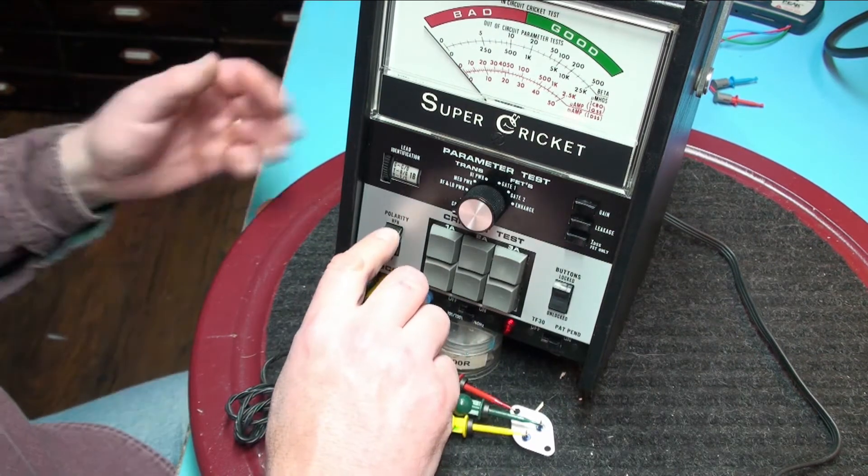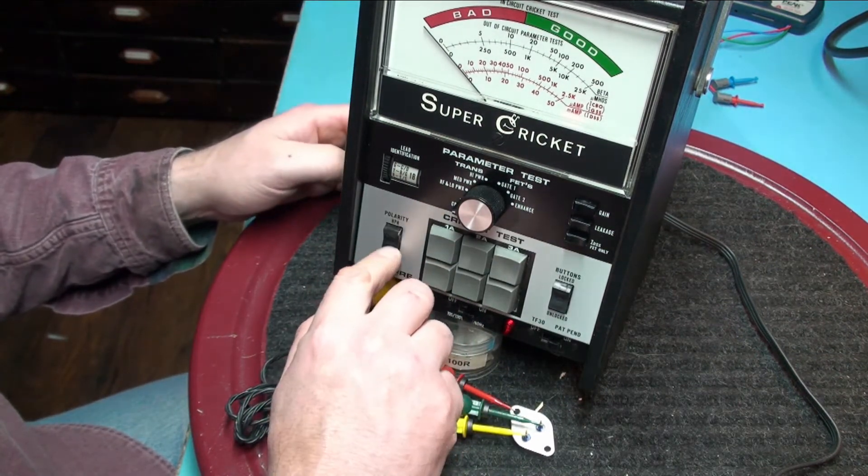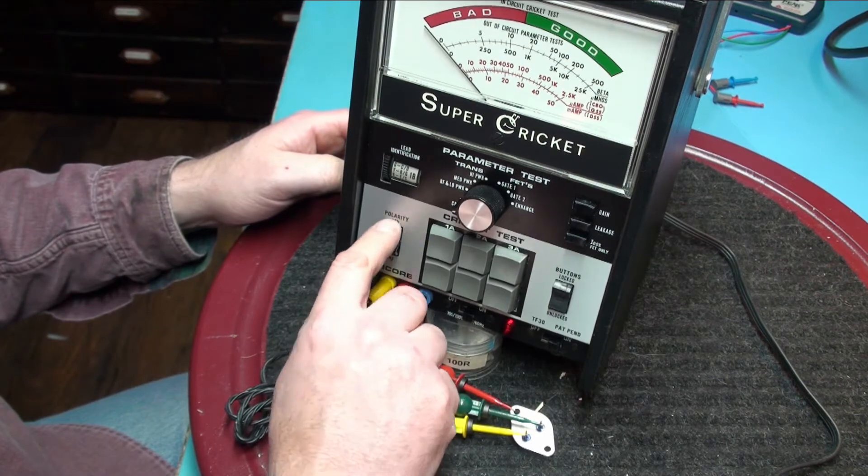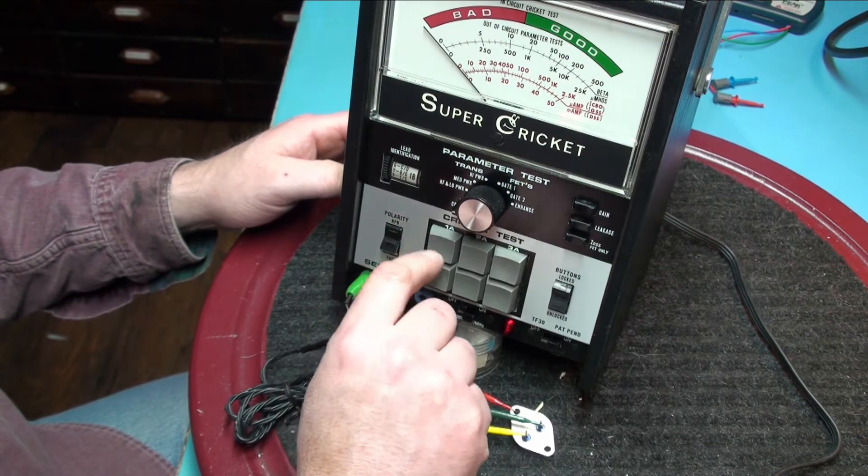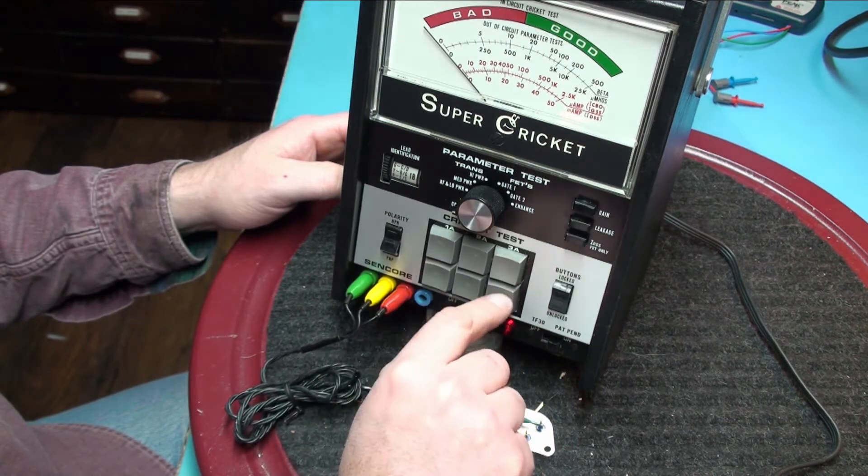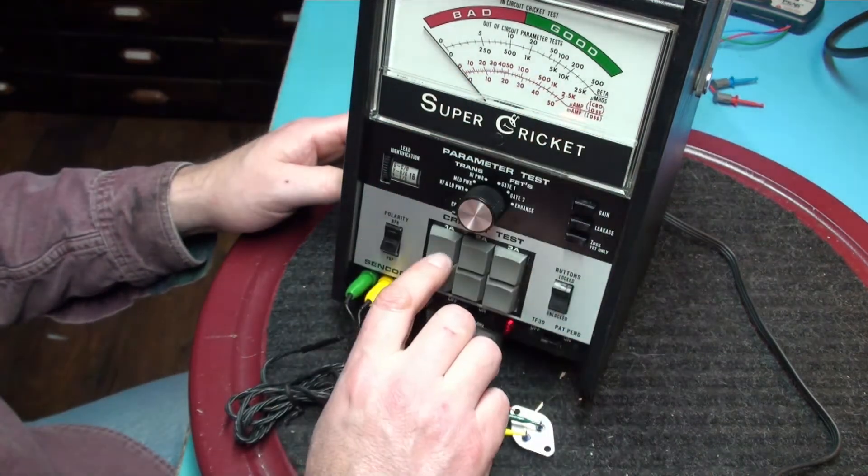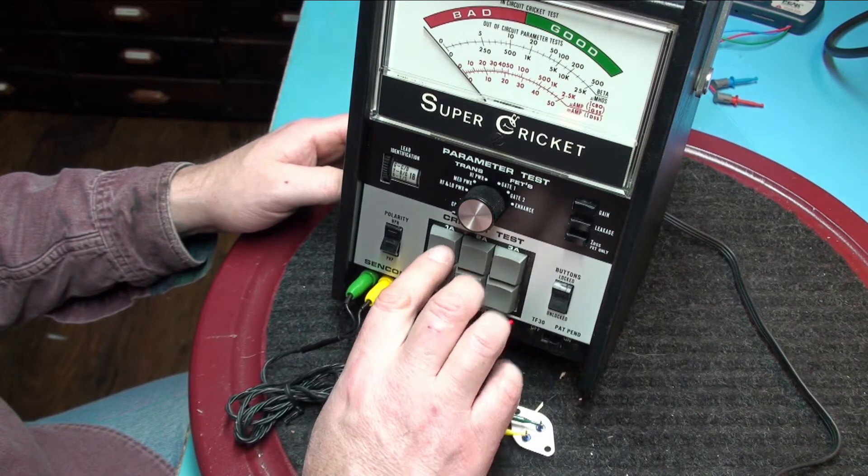So basically the polarity switch can be in either position. We are going to just for the sake of it I am going to start in NPN and I am going to cycle through these buttons and listen for a chirp and a good indication on the meter.